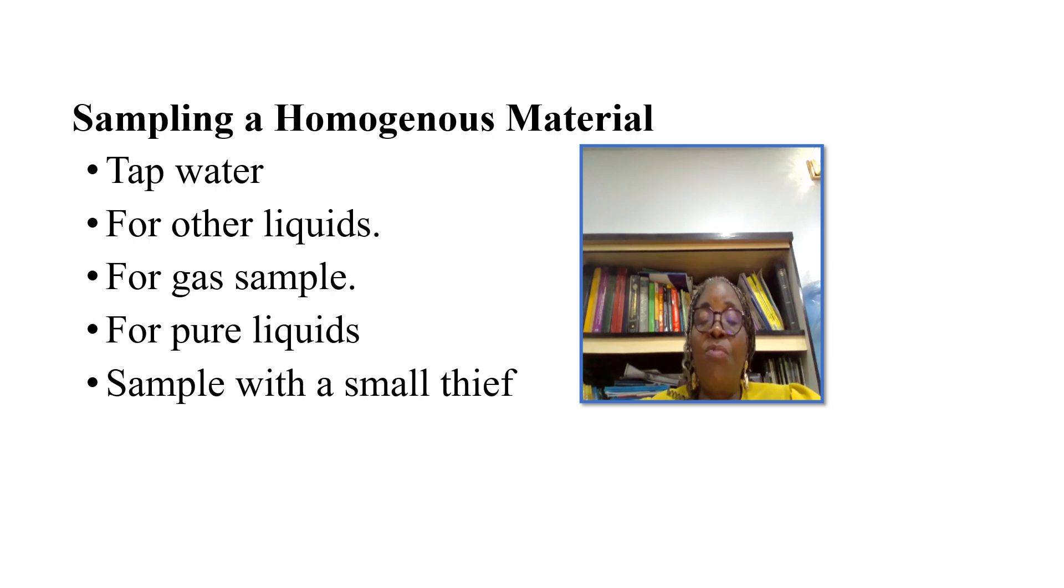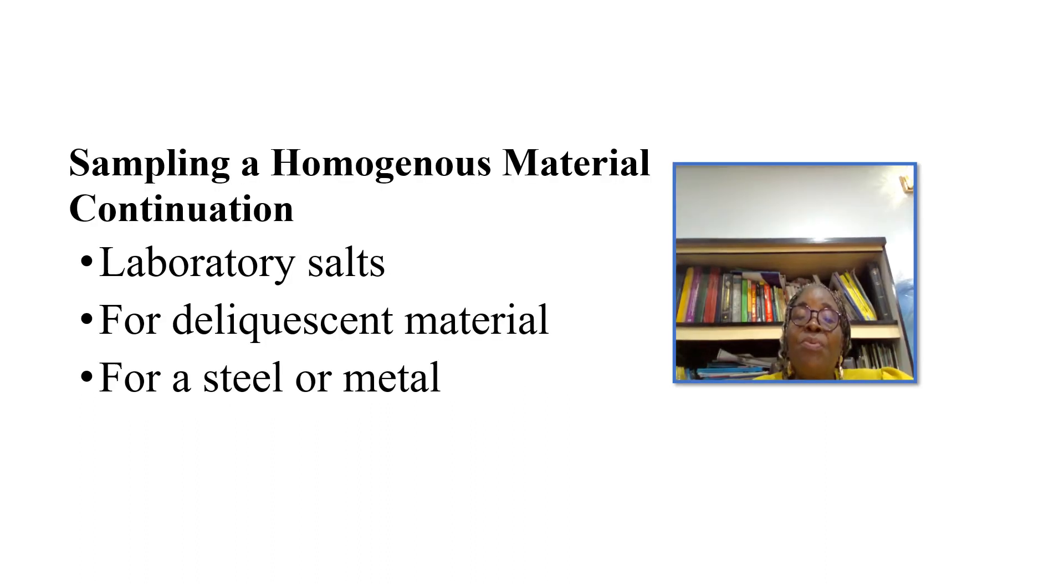For other liquids, we still work to ensure homogeneity before collecting the sample. And for gas samples, we flush the sampler and sample container before we collect the sample. For pure liquids, we pour out the needed sample or we dip the sampler into the middle and collect the sample, making sure that both the sampler and the sample container are chemically clean. A little quantity of the liquid is used to rinse the sampler before taking the sample.